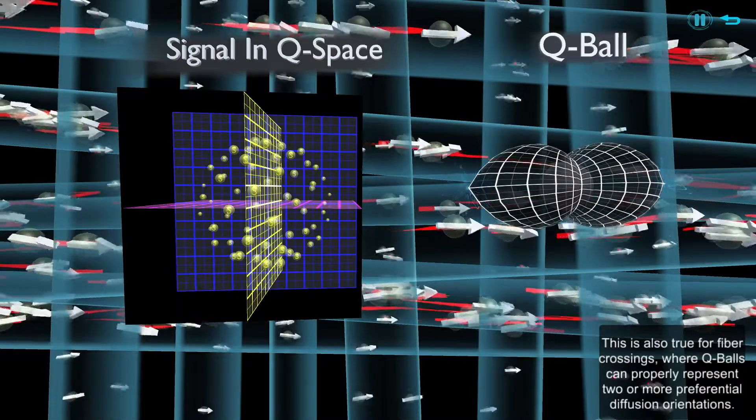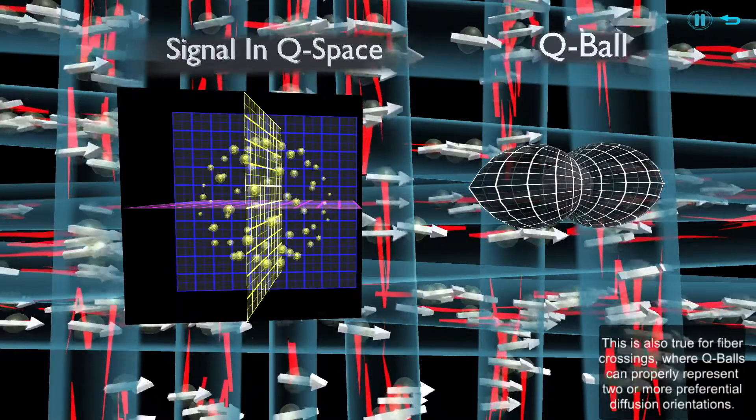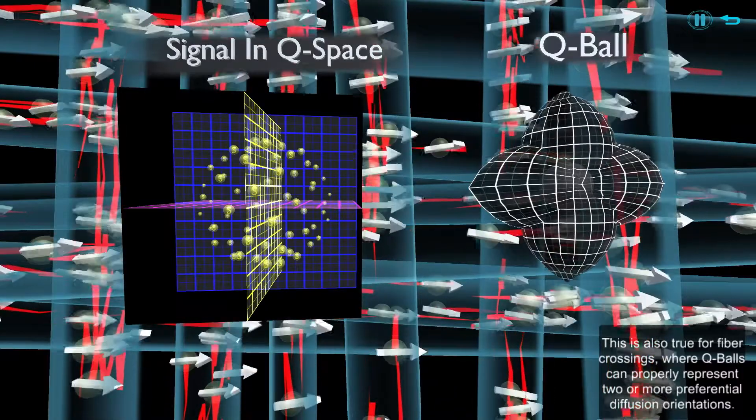This is also true for fiber crossings, where Q-balls can properly represent two or more preferential diffusion orientations.